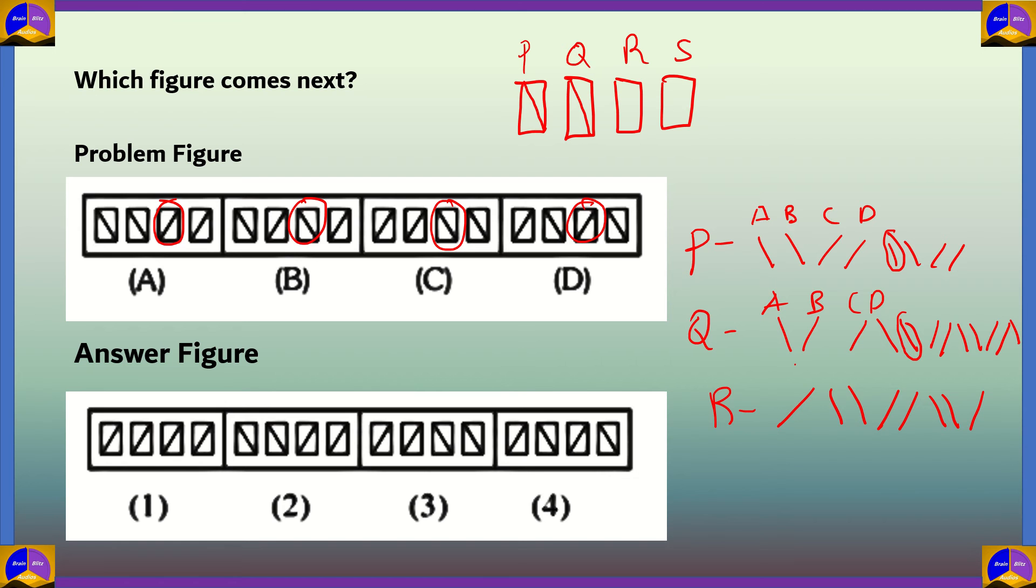A, B, C, D, so the next figure would have a slash because that's the next one in the pattern. So in box R we'd have a slash.